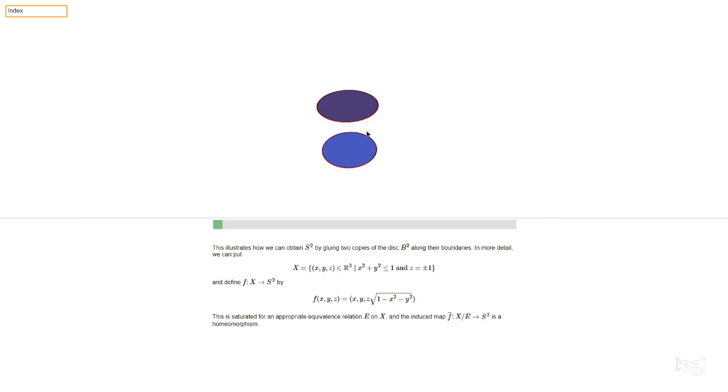So that means that you get an induced map f-bar from X mod E to S². And the thing we just said - two points are equivalent if they get mapped to the same place - that implies that this f-bar is injective. And there's a separate easy argument we see that f-bar is also surjective. So it's a bijection of topological spaces.